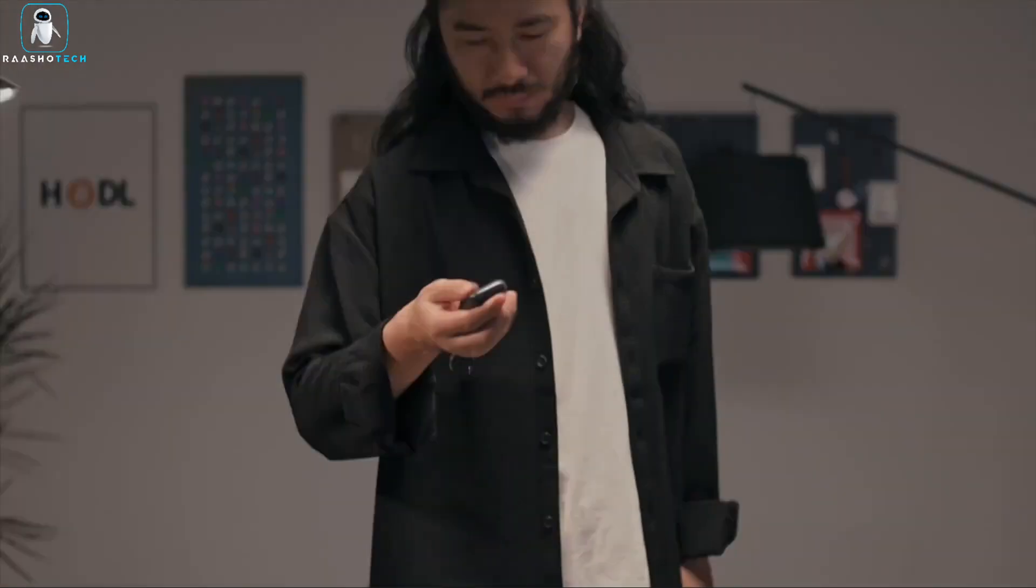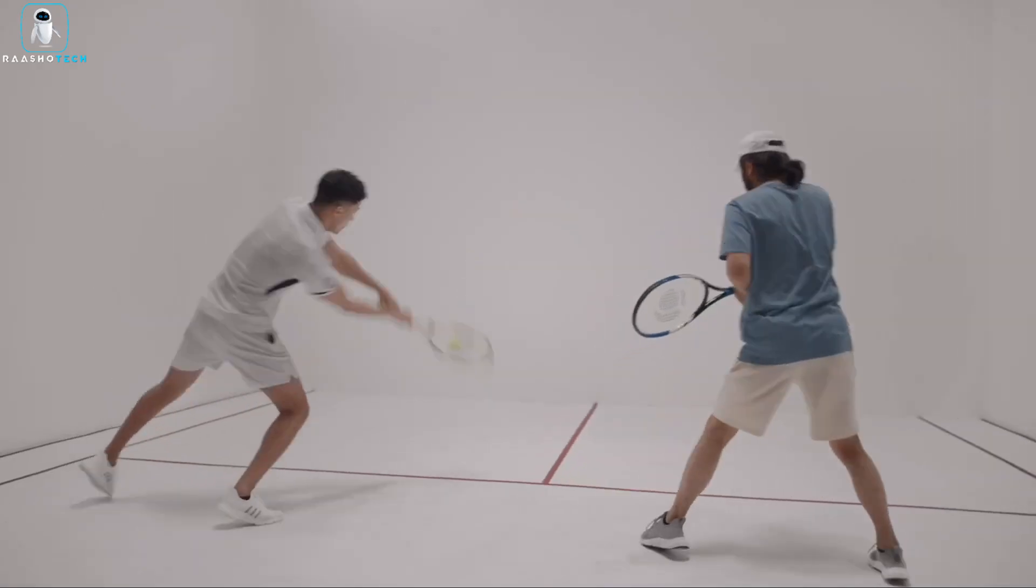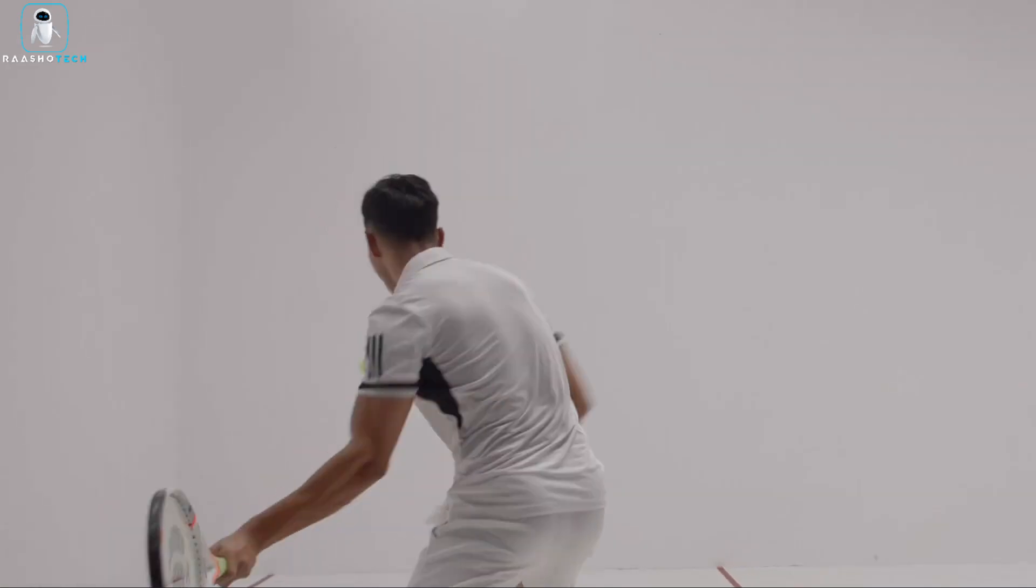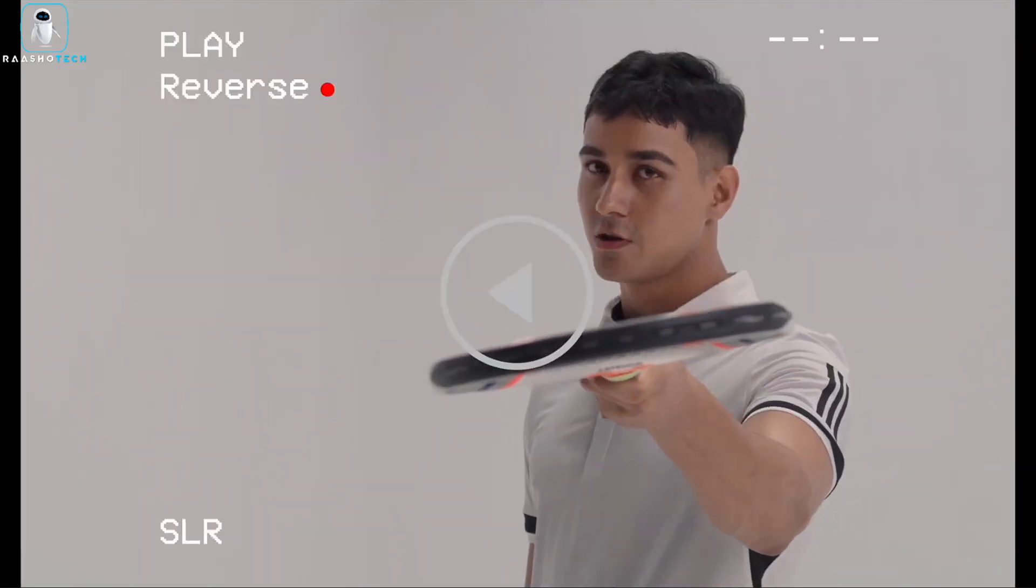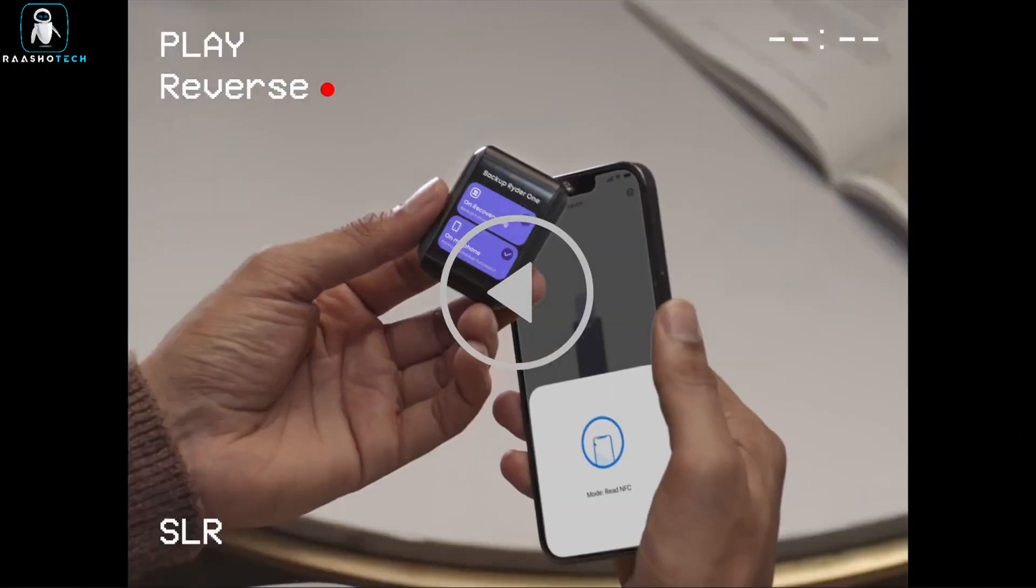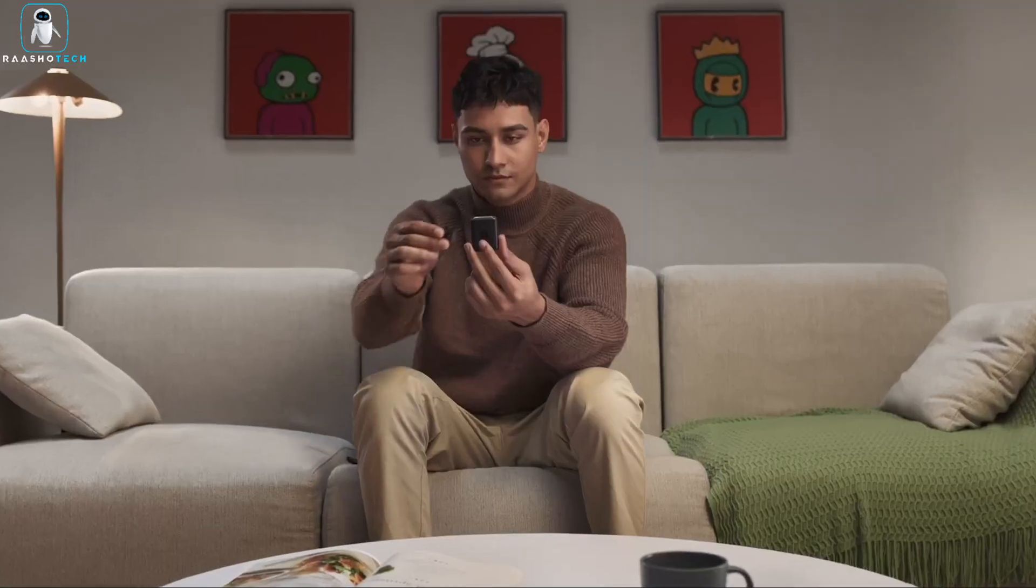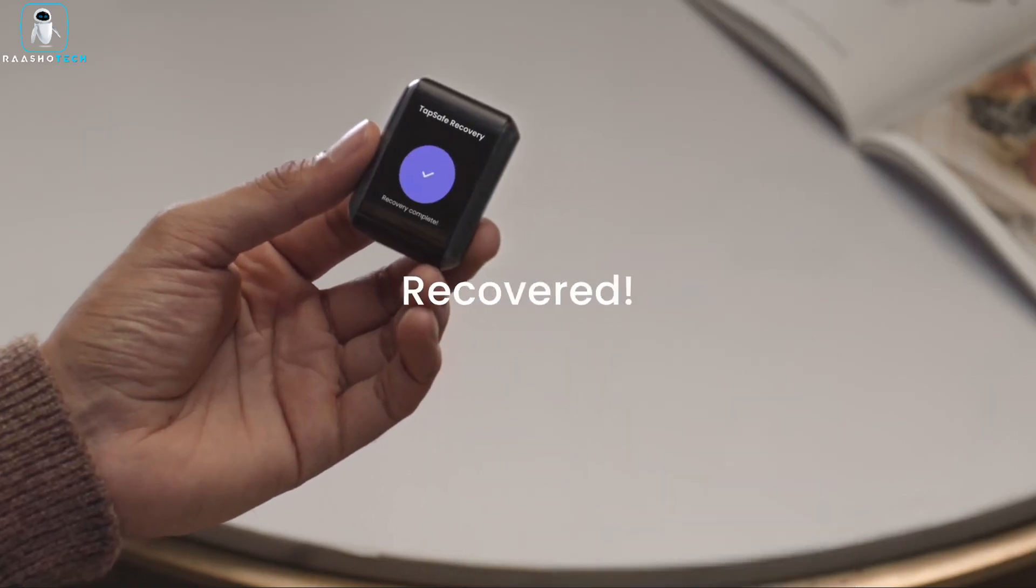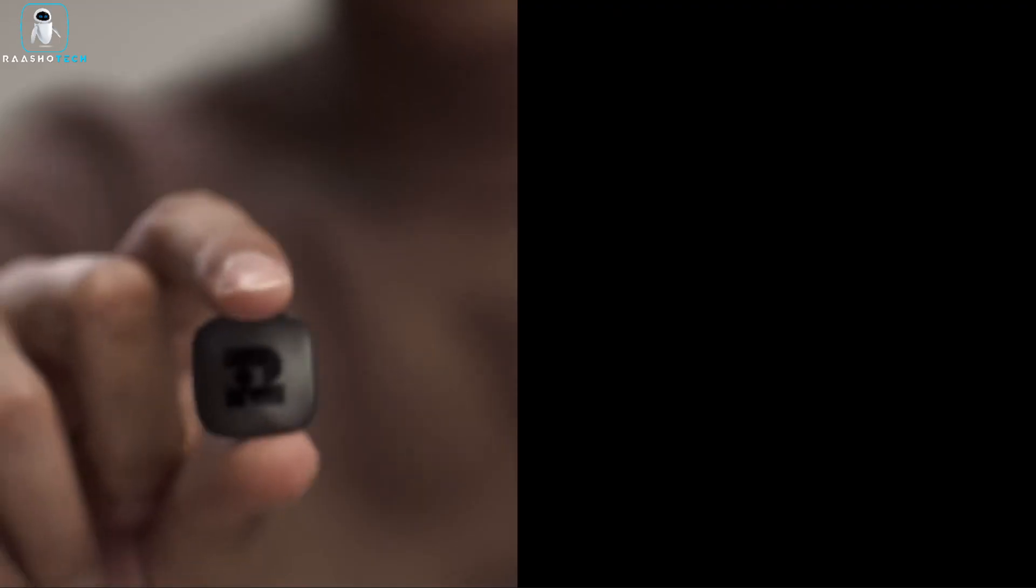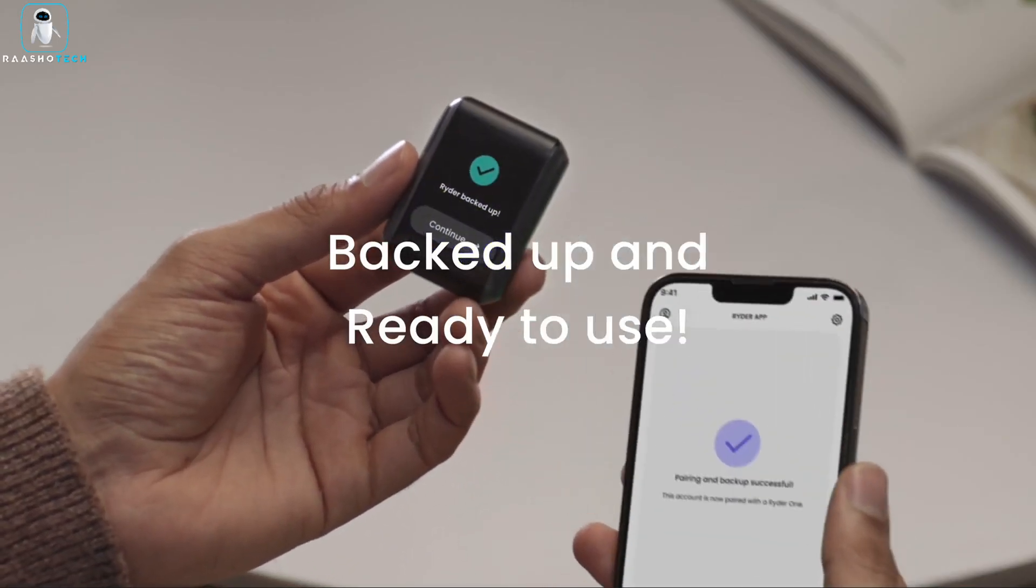This wallet is so offline, it's practically in a no-Wi-Fi witness protection program, minimizing any chance of sneak attacks. Waterproof? Dustproof? It's practically indestructible, like a superhero in a cape made of Kevlar. And did I mention it comes with a wireless charger? No more cord chaos. Ryder One, making crypto cool, secure, and as stress-free as a sloth on vacation. Get ready to be the James Bond of the crypto world, but with fewer gadgets and more giggles.